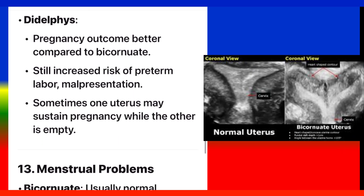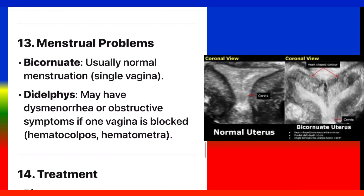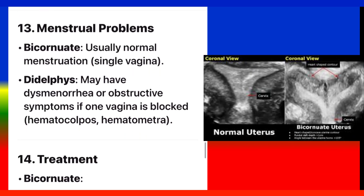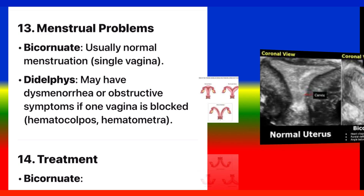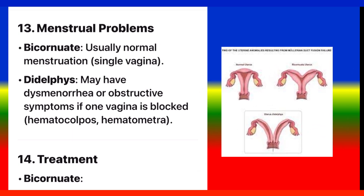Point 13: Menstrual problems. Bicornuate: usually normal menstruation with a single vagina. Didelphys: may have dysmenorrhea or obstructive symptoms if one vagina is blocked, leading to hematocolpos or hematometra.